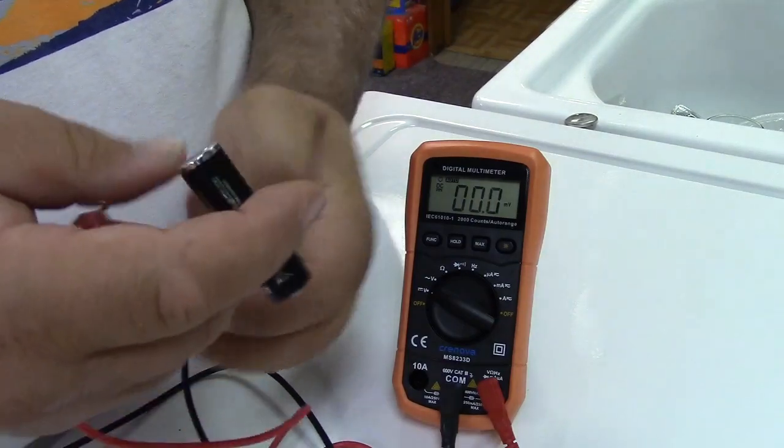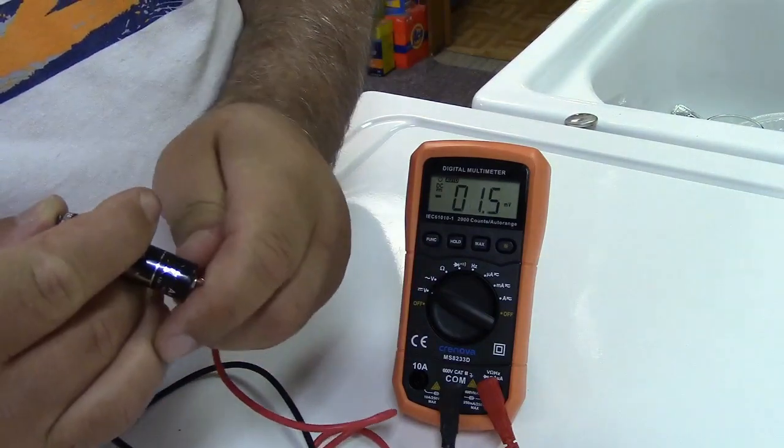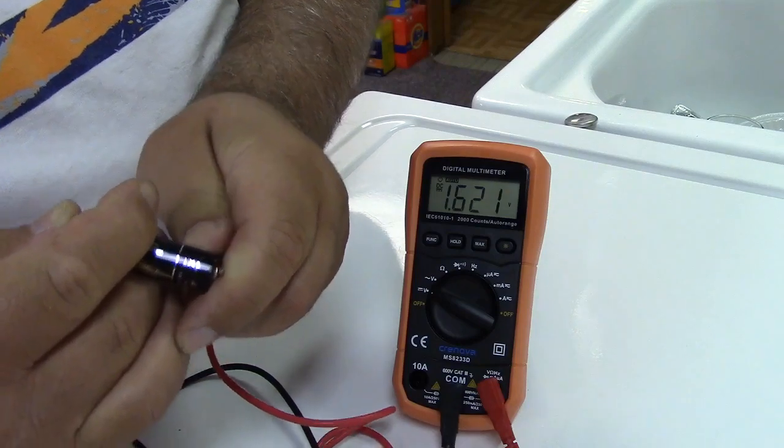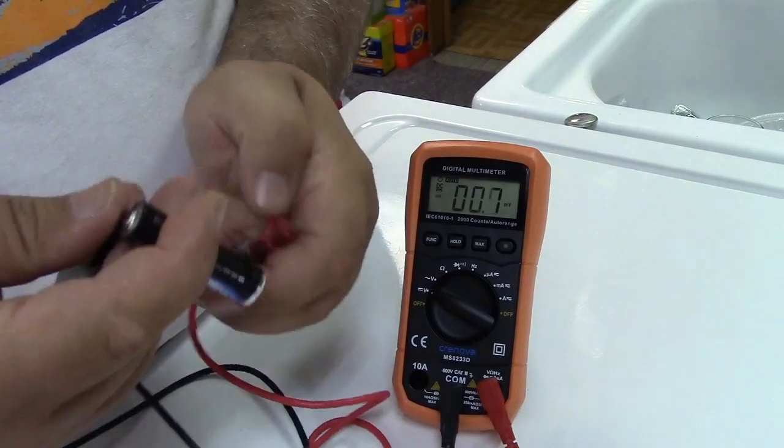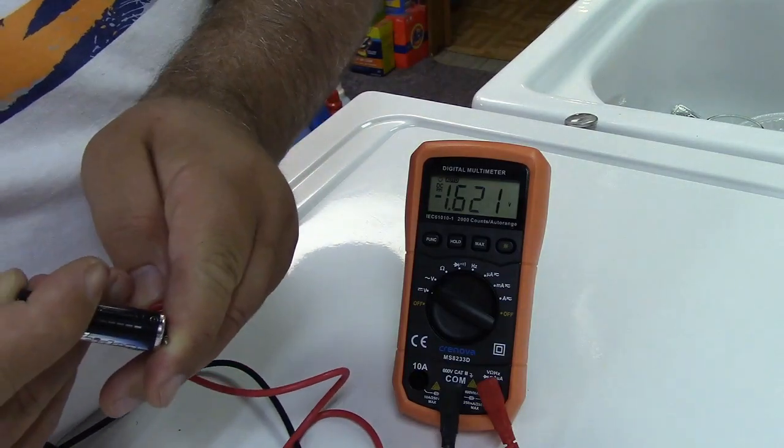I have another one here that we can test. 1.621, so that looks good also. And notice that it doesn't make a difference even if you go backwards and put the black on the red and the red on the black. It's just going to show a minus sign.